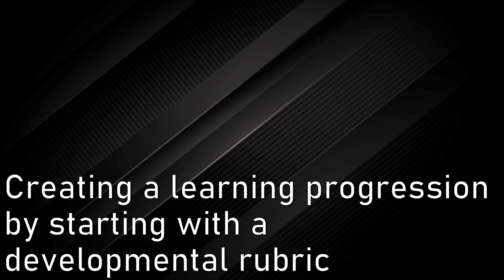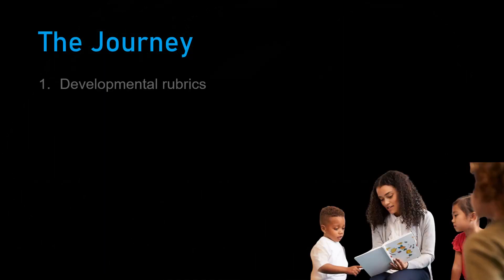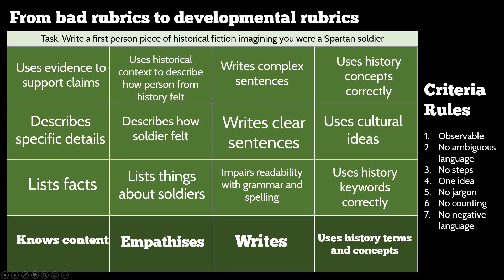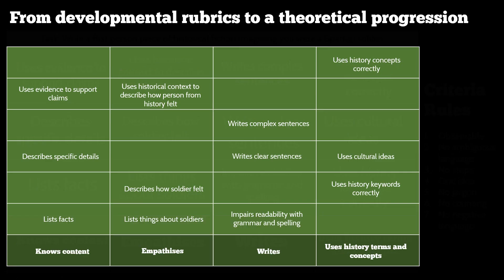A lot of schools do it starting from existing rubrics because they don't want to throw out what they already have. In the pairwise comparison, the higher up the rubric something is, the harder it is, and things at the same level are roughly the same difficulty. Remember, that's what's called theoretical or hypothesized — it's just what teachers think. If we can validate that with data, it massively improves the quality of our progressions.